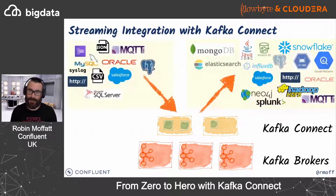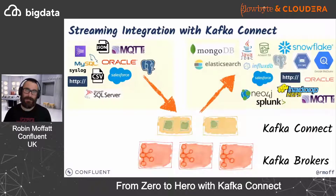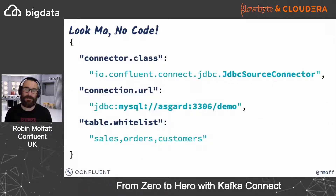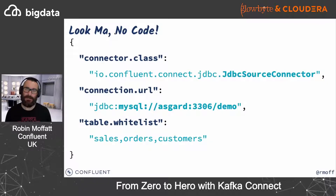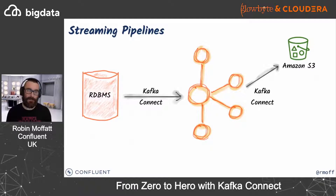It's a very common pattern whether we're building analytics or applications — getting data from other places into Kafka to work with there, or getting data from Kafka out to other places for analytics or to drive other applications. The great thing about Kafka Connect is it's just configuration to use, so you don't need to write any code. You just set up configuration, which makes it accessible to a lot more people than if you're using the producer and consumer APIs.